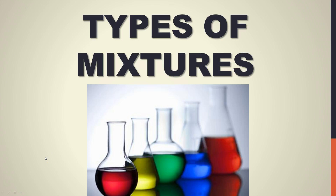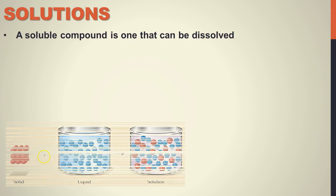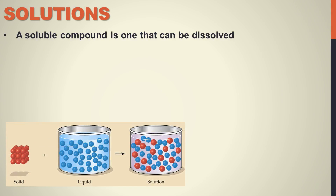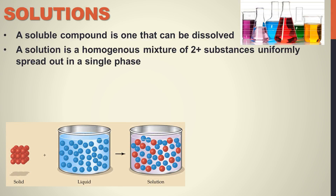Hello students of science, let's talk about different kinds of mixtures. A solution is made up of a soluble compound — a compound that can be dissolved. When we're talking about a solution specifically, that is a homogeneous mixture of two or more substances that are uniformly spread out in a single phase.